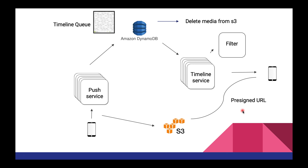This system is not the most perfect, but the key points we touched upon are: how content gets delivered through a fanout push-based approach, and how we handle 24-hour expiry using DynamoDB and Redis TTL features. I hope you learned something — see you guys in the next one. Bye.